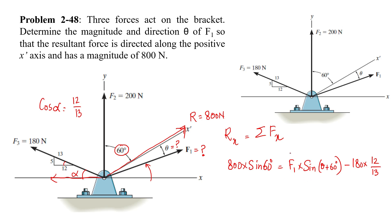In this equation we have F1 and theta as variables. Keeping the F1 term on one side: F1 sine(theta + 60°) equals — the F3 x-component was negative, so shifting it to the other side it becomes positive. Adding the values together, we get 858.97. Let's call this equation number one.